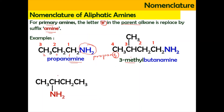For the next example, we need to do the numbering from the left-hand side: one, two, three, and four. We don't number from the right side because we need to give the carbon attached to NH2 the lowest number. So the name is butanamine because it has four carbons, but the amine group is attached to carbon number two, so we have to put number two in front — it is going to be 2-butanamine.